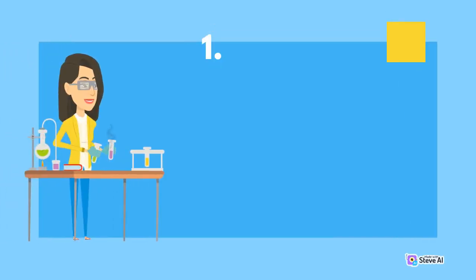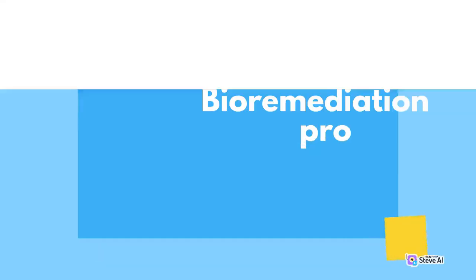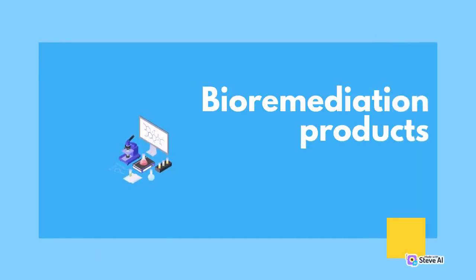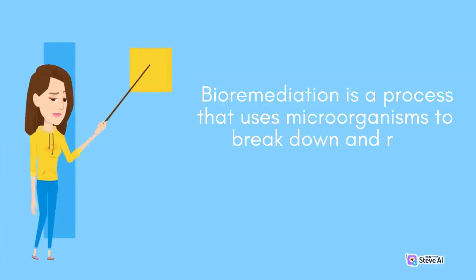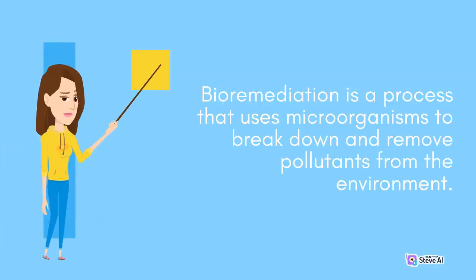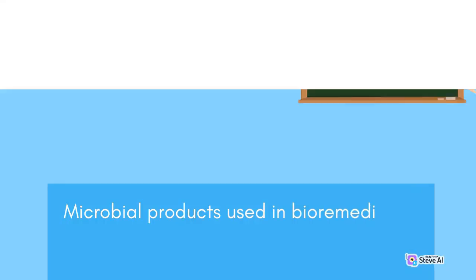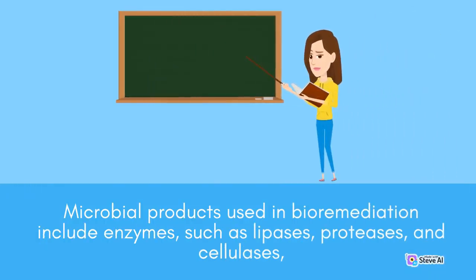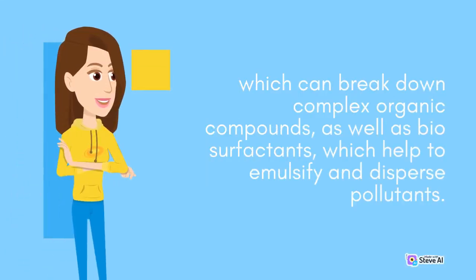1. Bioremediation Products. Bioremediation is a process that uses microorganisms to break down and remove pollutants from the environment. Microbial products used in bioremediation include enzymes, such as lipases, proteases, and cellulases, which can break down complex organic compounds, as well as biosurfactants, which help to emulsify and disperse pollutants.